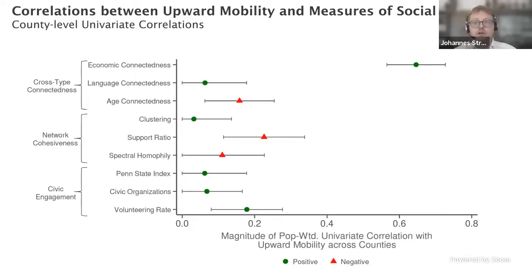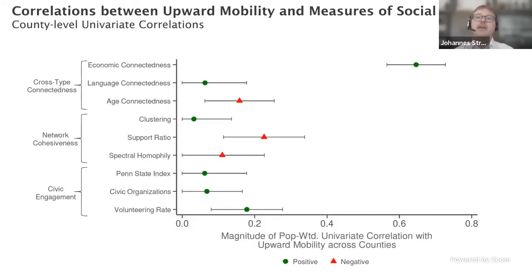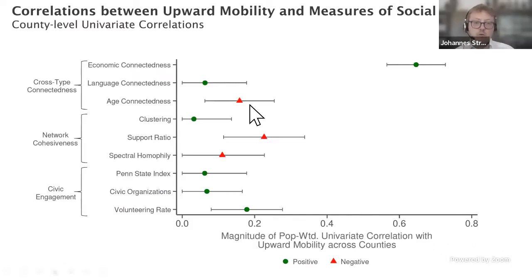Next, we try to understand why the correlation between economic connectedness and economic mobility comes about. An obvious concern is that areas with high economic connectedness might simply be richer areas, and richer areas naturally have more resources and more high-income people for low-income people to befriend. So we use statistical techniques to understand the relative contribution of economic connectedness versus average area income in explaining differences in upward mobility.